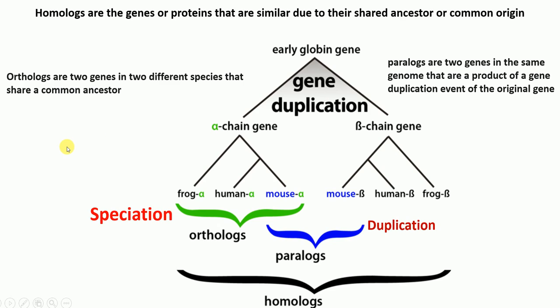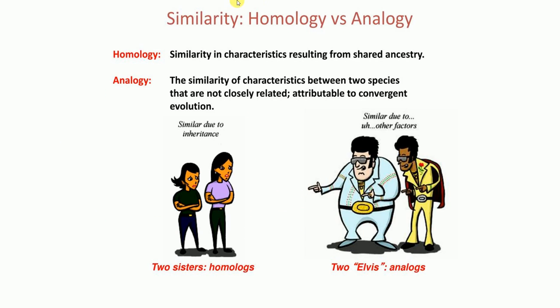Homologs can be not only genes and proteins but also organs. Homology is a similarity resulting from a shared ancestor — this includes homologous organs, homologous sequences or genes, homologous chromosomes, or homologous proteins. Analogs are the opposite of homologs: analogy results from convergent evolution, whereas homology results from divergent evolution.